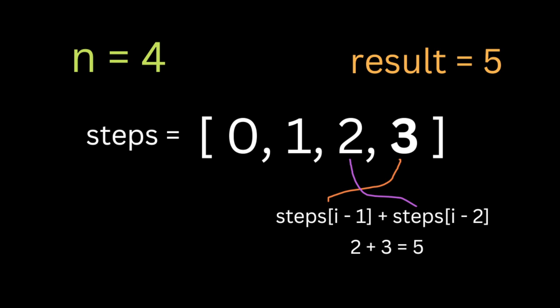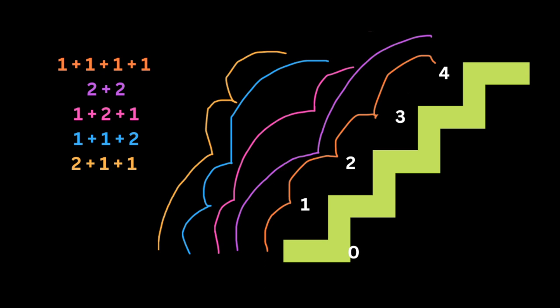We create a new array of steps that stores the value at each step, and it's going to be 0, 1, 2, 3. Think of each index value in this array as a number of steps. For example, to reach zero steps we need zero steps, to reach one step we need one step, to reach two steps we need two steps.